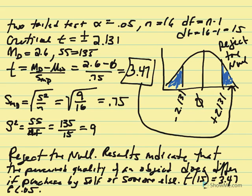Since the t value fell into the critical region, we reject the null hypothesis and conclude that whether you buy something versus someone else purchasing it for you will have an effect on the perceived value of that object.